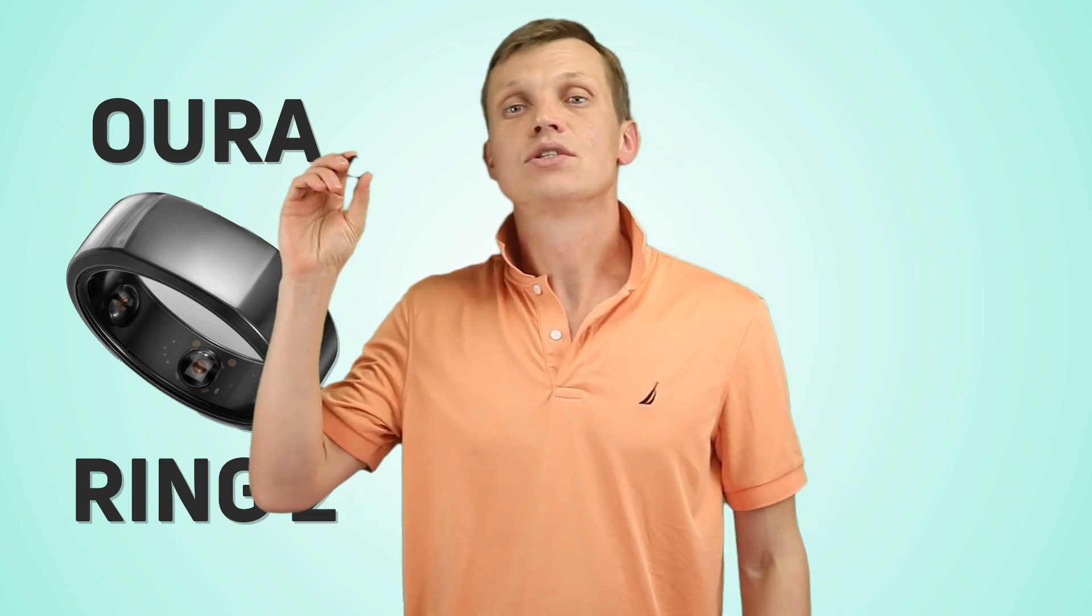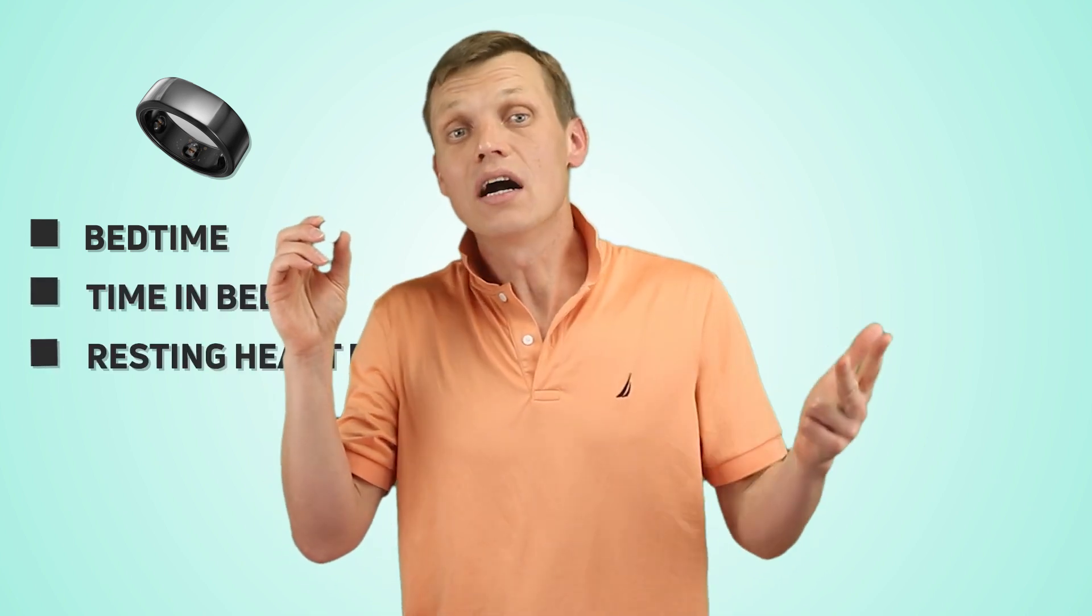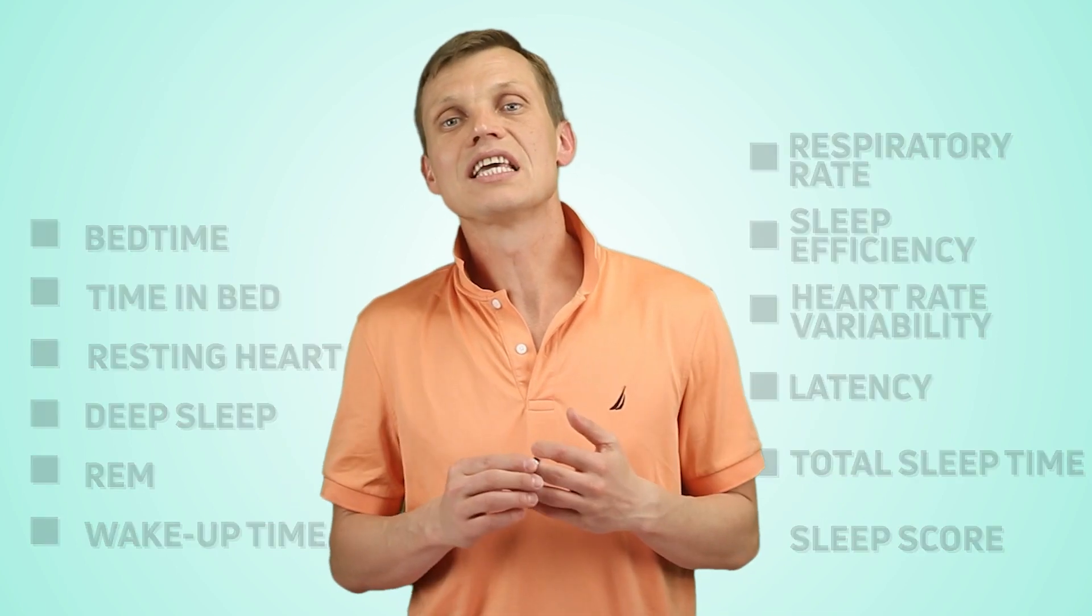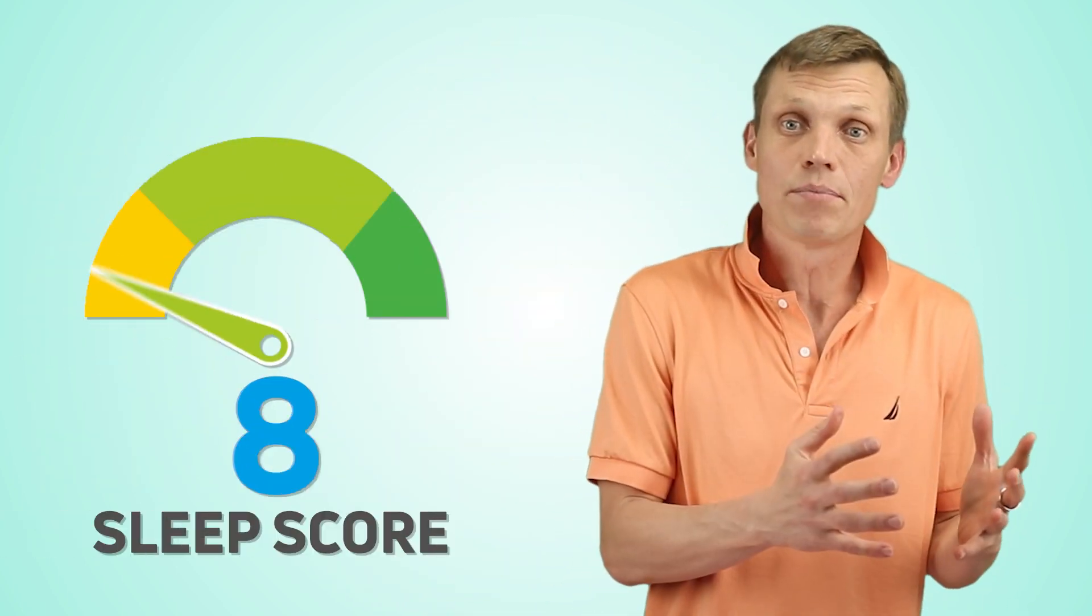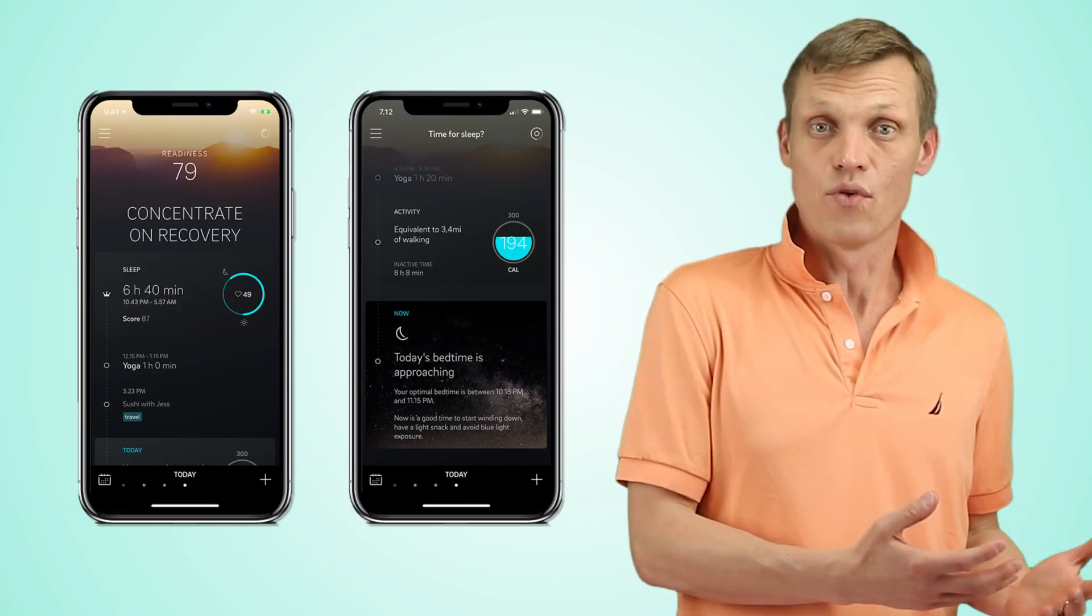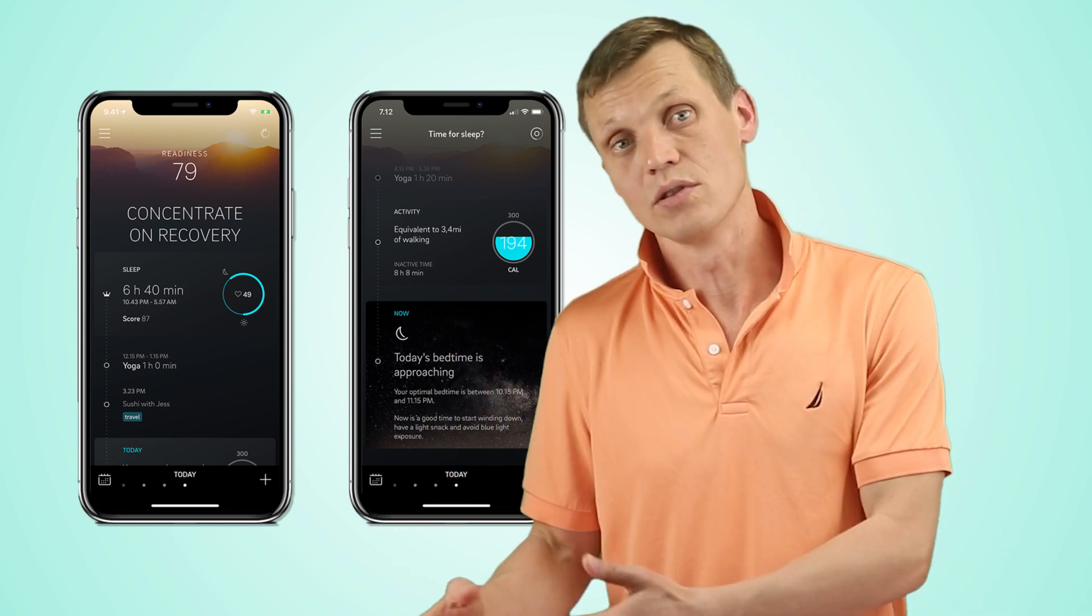The Oura Ring 2, this beautiful ring, tracks 12 key sleep indicators such as bedtime, time in bed, resting heart rate, deep sleep, REM and others. It also gives you a sleep score, a single number used to assess the quality of your sleep. The ring syncs up to a neat smartphone app and has a website that can be used to review your data online.